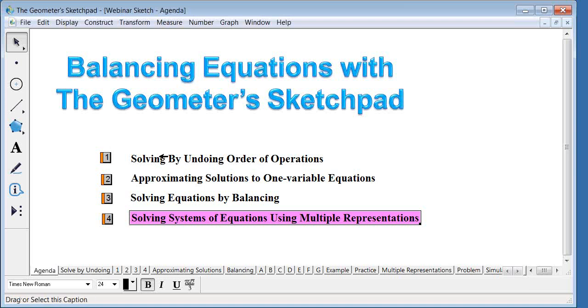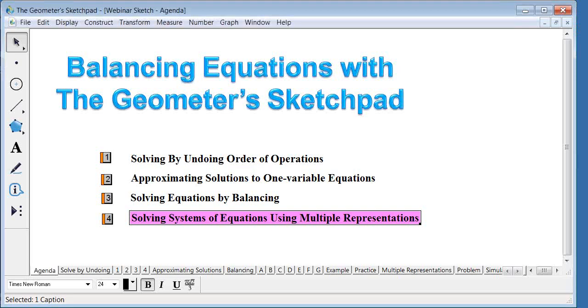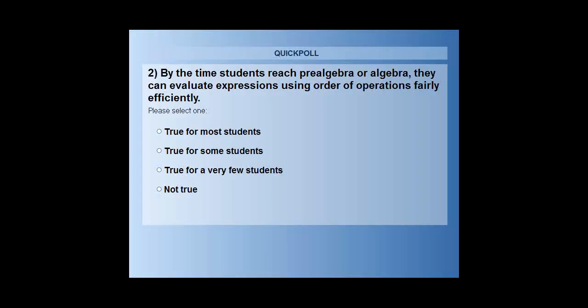We're going to start with solving by undoing. Before we get into the activity, I wanted to send out one more quick poll, because undoing involves students knowing how to use order of operations. The question I've just sent out says: by the time students reach pre-algebra or algebra, they can evaluate expressions using order of operations fairly efficiently — respond true for most, true for some, true for a few, or not true.